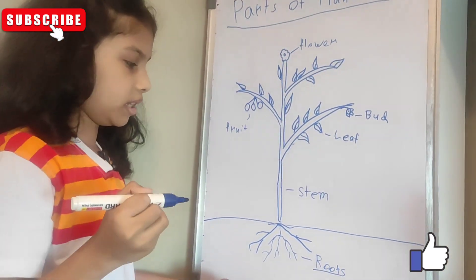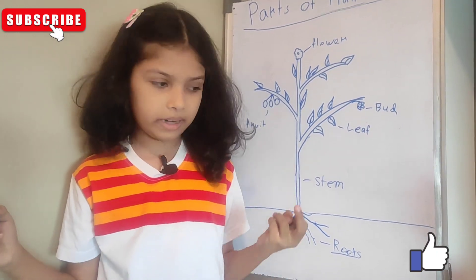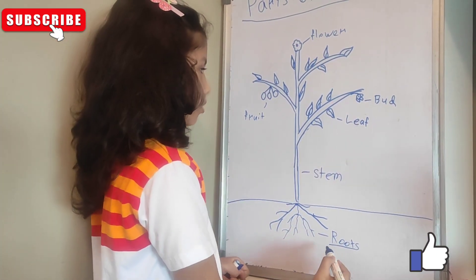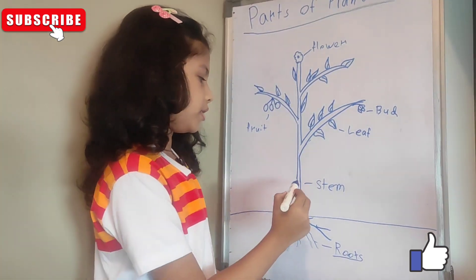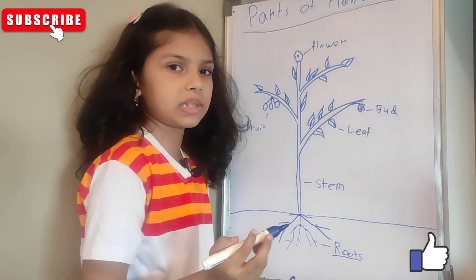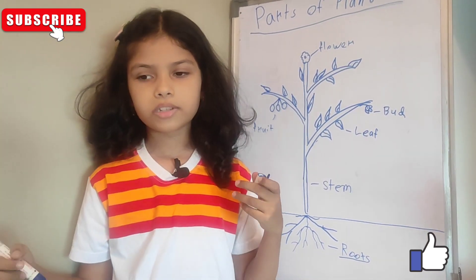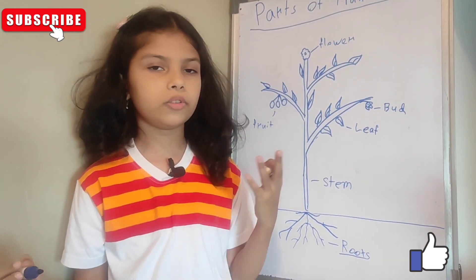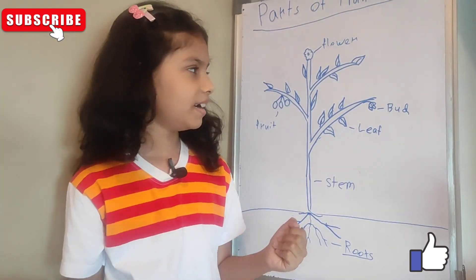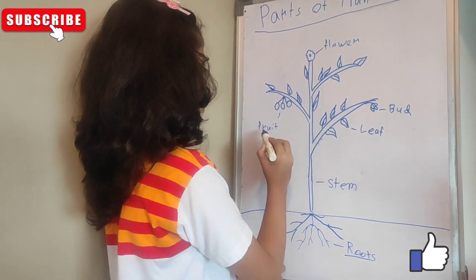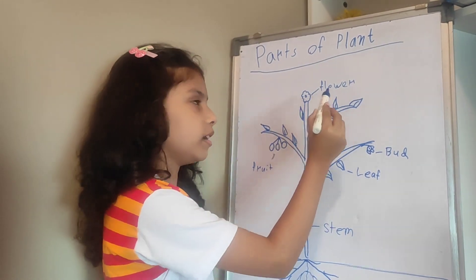Now I'm going to tell you how they protect and help the plant. The roots give water and minerals to the plant. The stem keeps the plant together. The leaf absorbs sunlight and makes food for the plant. The bud is just an unbloomed flower.